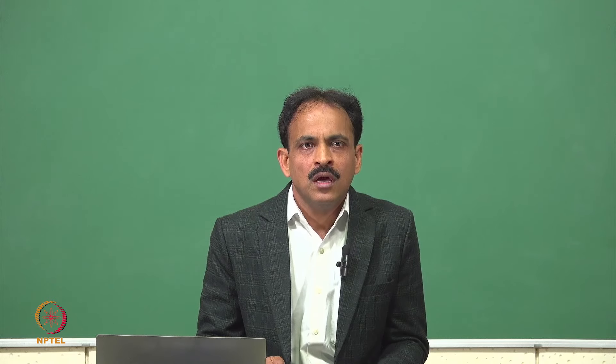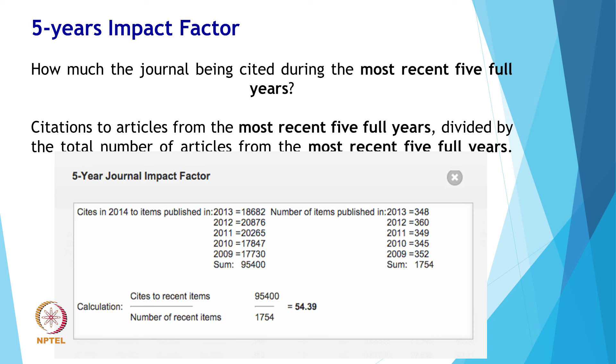The five-year impact factor indicates how much a journal has been cited during the most recent five full years. For its calculation, citations to articles from the most recent five full years are divided by the total number of articles from those five years. For example, the 2014 five-year impact factor for NEJM (New England Journal of Medicine) is 54.39, calculated by taking citations in 2014 to papers published from 2009 to 2013 and dividing by the total number of papers published from 2009 to 2013.